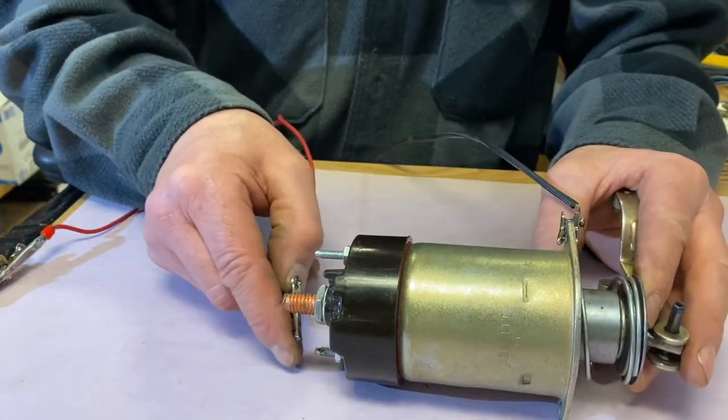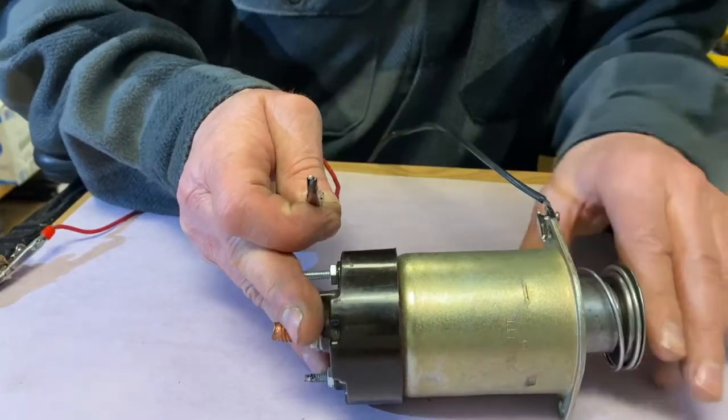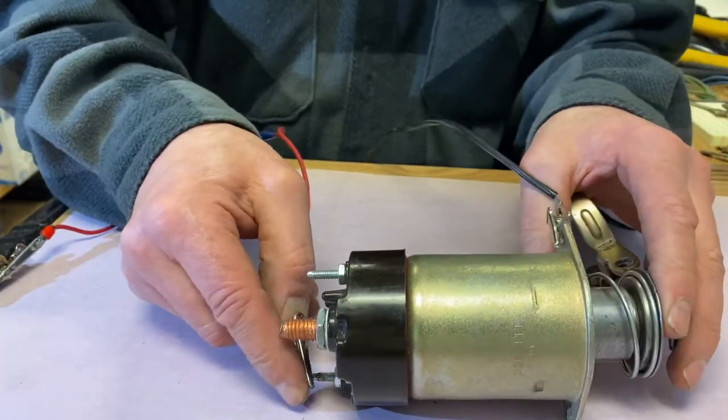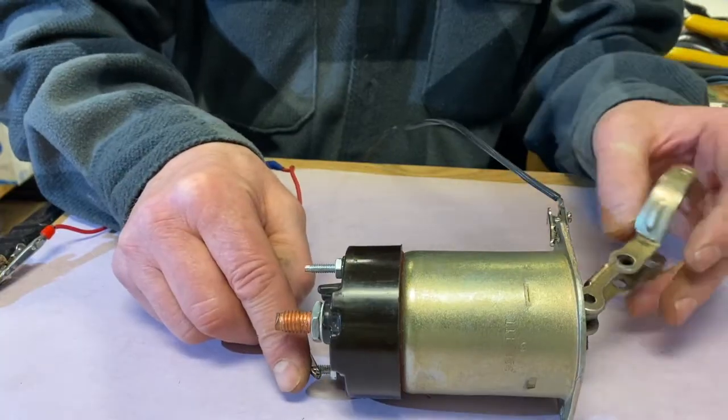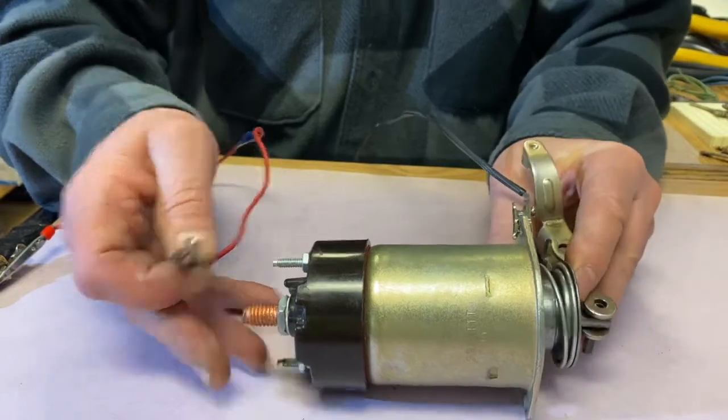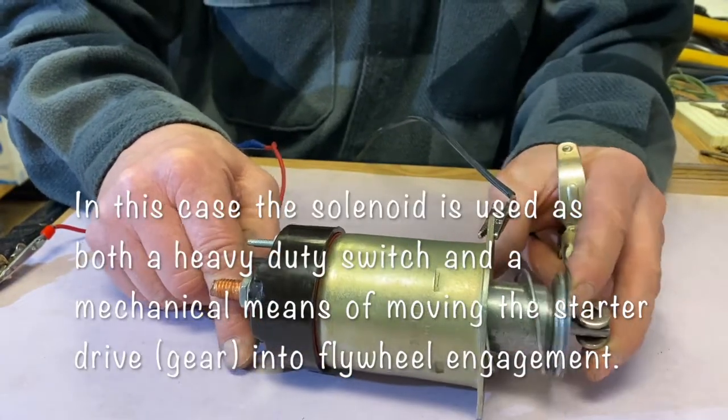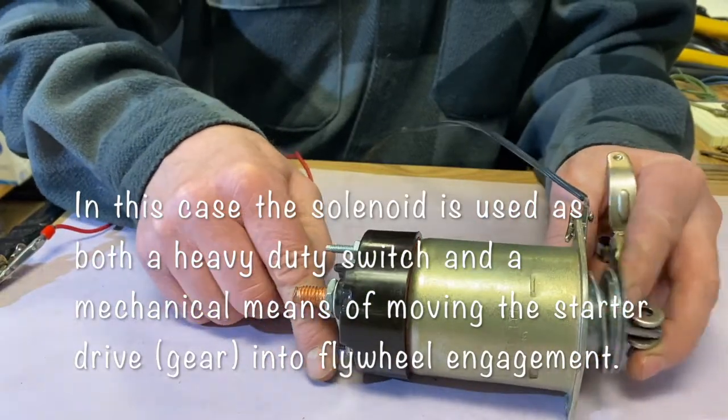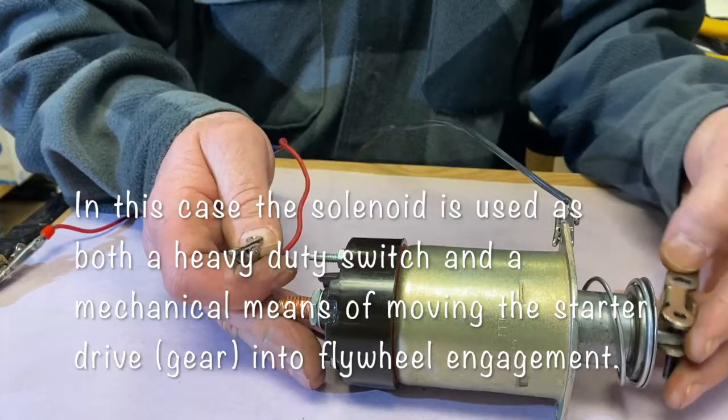So that mechanically can now do work just by sending current into that solenoid. You can see that when I let go, the spring pushes the solenoid back out. Every time we energize the solenoid, it's pulling in on the plunger doing its work.